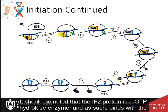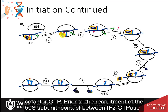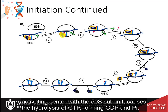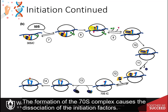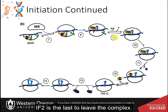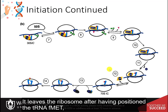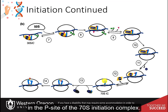It should be noted that the IF2 protein is a GTP hydrolase enzyme and, as such, binds with the cofactor GTP prior to the recruitment of the 50S subunit. Contact between the IF2 GTPase activating center with the 50S subunit causes the hydrolysis of GTP, forming GDP and Pi. The formation of the 70S complex causes the dissociation of the initiation factors. IF2 is the last to leave the complex.